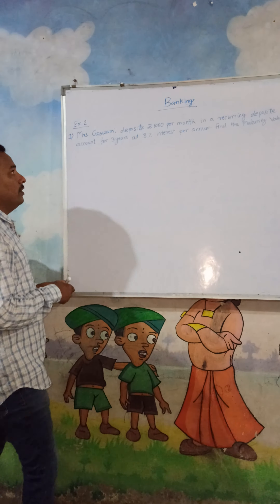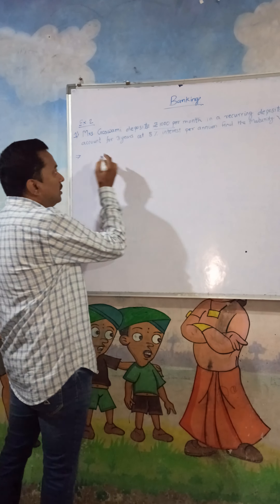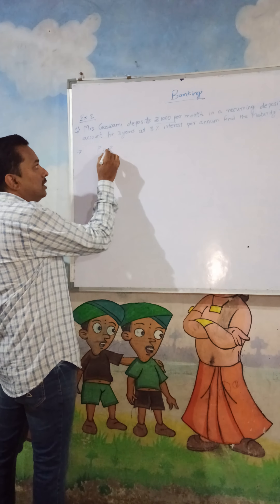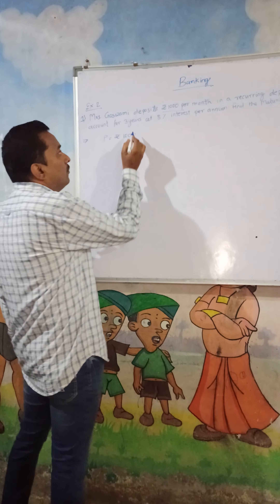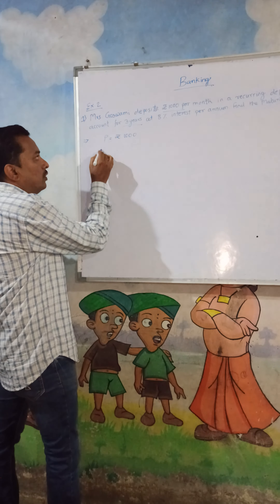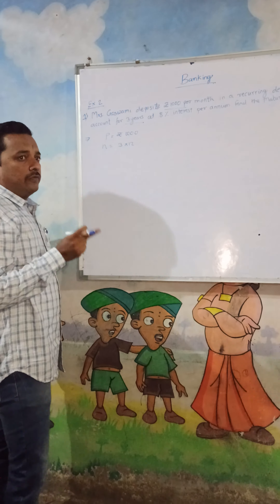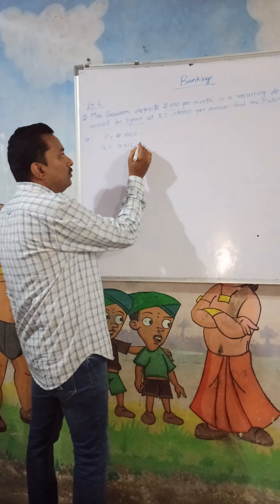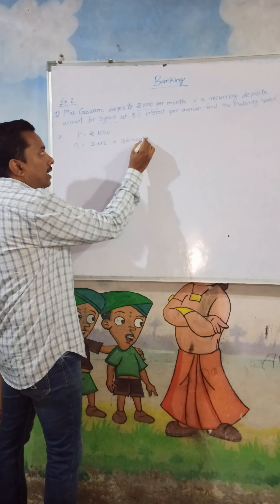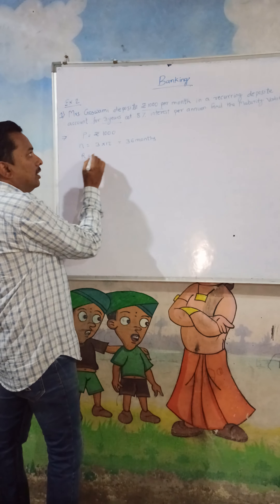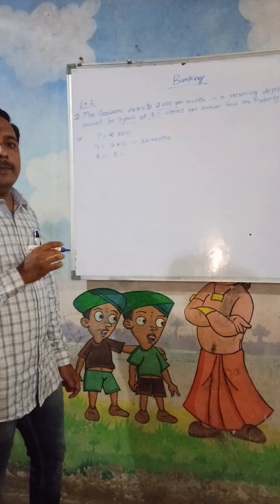So first we have to identify which values are given. So 1000 is the principal — you have to deposit rupees 1000 per month. For 3 years, n is equal to 3 into 12, because in 1 year there are 12 months, so 3 years gives 36 months. And r, the rate of interest, is 8%.